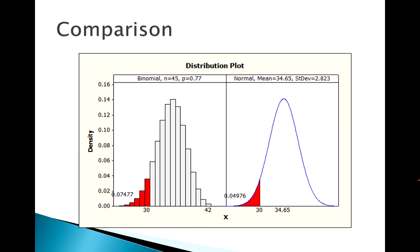So let's compare the two. Here's my binomial probability, about 7.5%. And here's my normal approximation probability, about 5%. So 7.5% versus 5%. Pretty close. It's not a perfect approximation. It's pretty good, but it's not perfect.